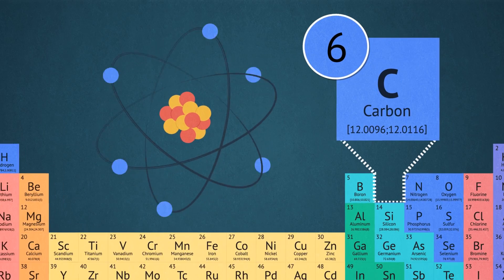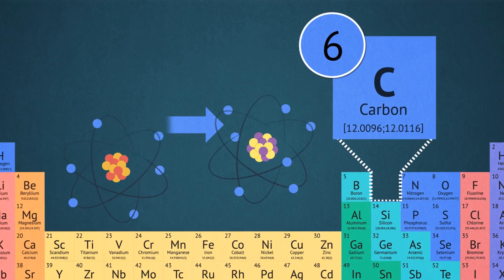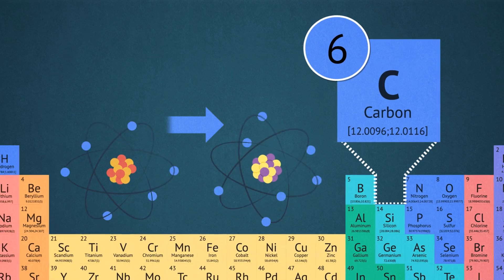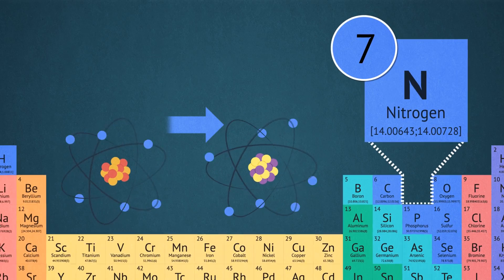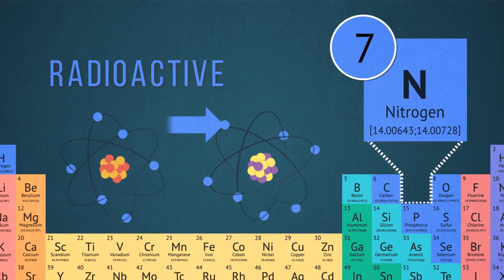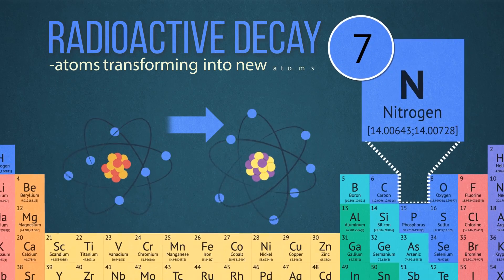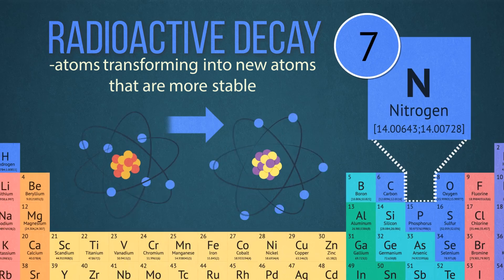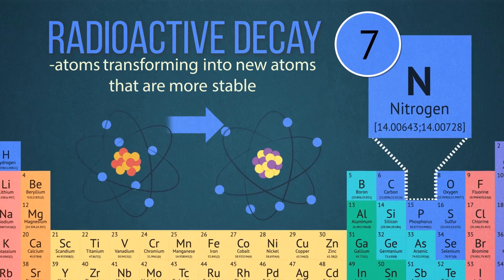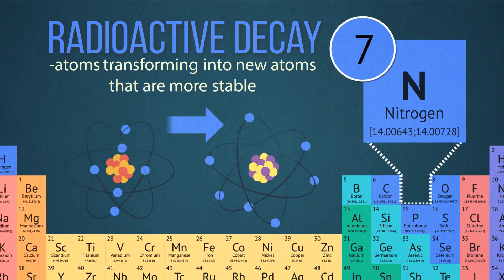In their studies, scientists learned that some elements will change from one element to another, causing the number of protons and/or neutrons to change. We call this radioactive decay. This process is all about atoms transforming into new atoms that are more stable. Elements that are less stable will decay into elements that are more stable.